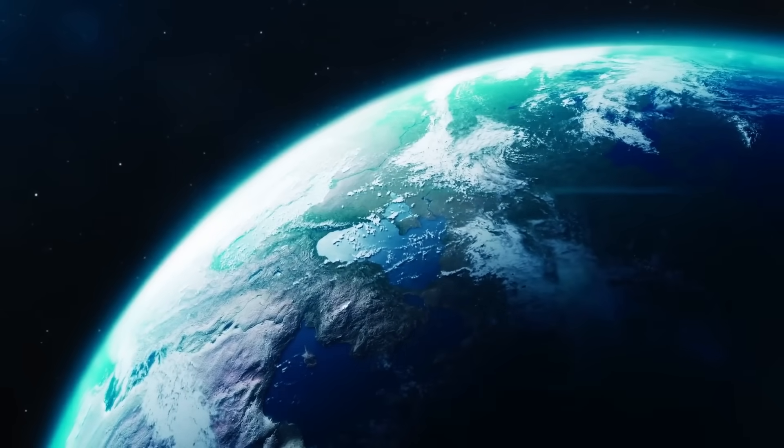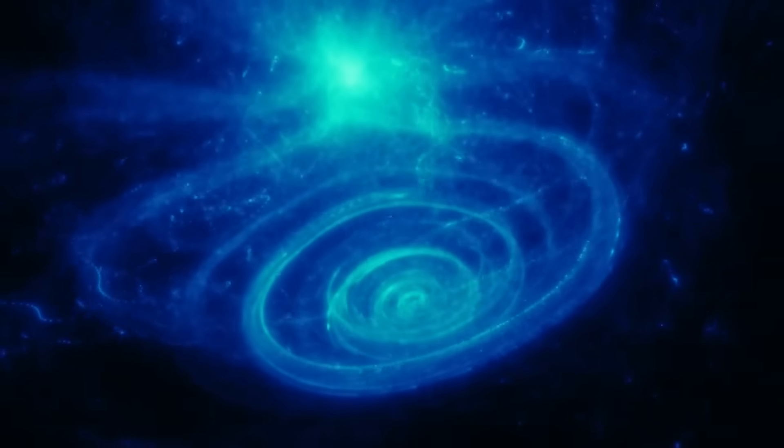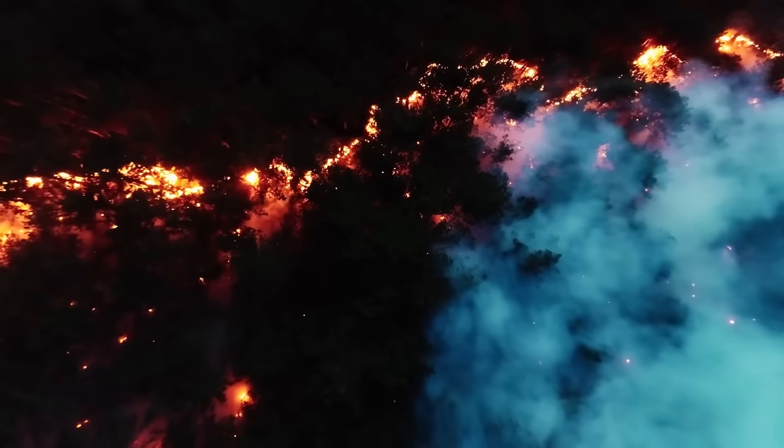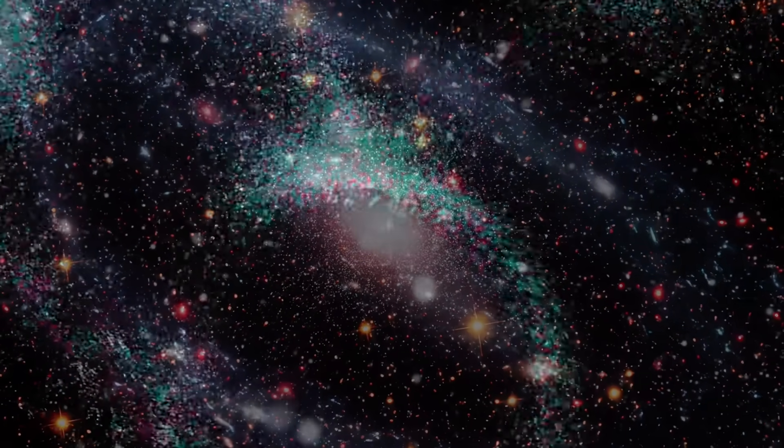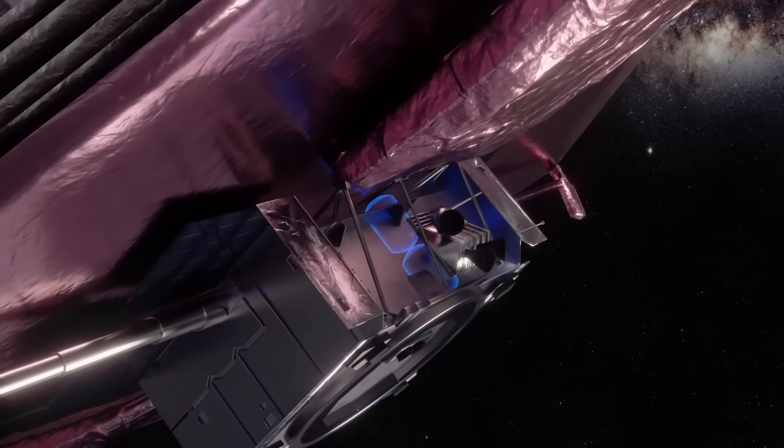More frightening than what it resembled was where it was located. The coordinates matched a cold spot in the cosmic microwave background, an area long thought to be a statistical anomaly, devoid of galaxies and stars. But now, it looked more like a lock, a vault, a geometric construct encoded into the fabric of the universe itself. And if it's a vault, what's inside it?